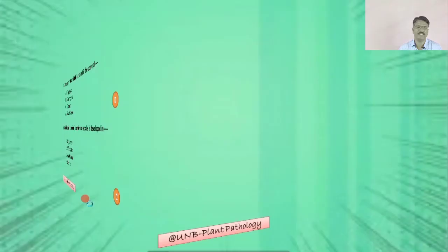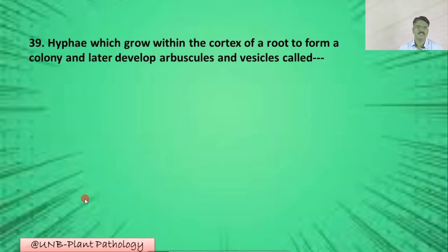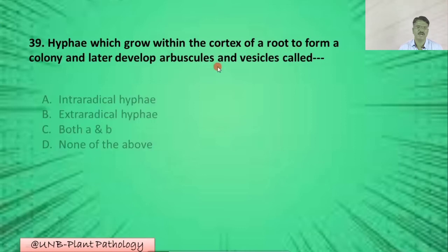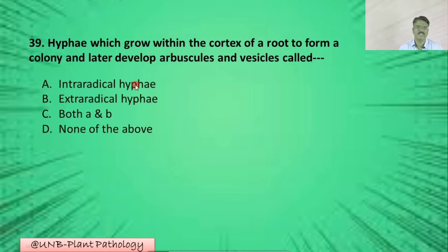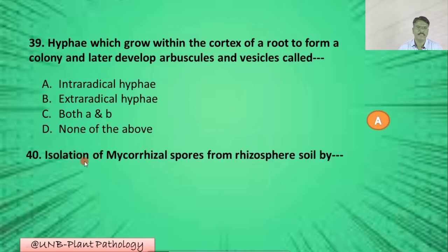Question number thirty-nine: Hyphae which grow within the cortex of a root to form a colony and later develop arbuscules and vesicles are called — A: intra-radical hyphae; B: extra-radical hyphae; C: both A and B; D: none of the above. The correct option is A: intra-radical hyphae.